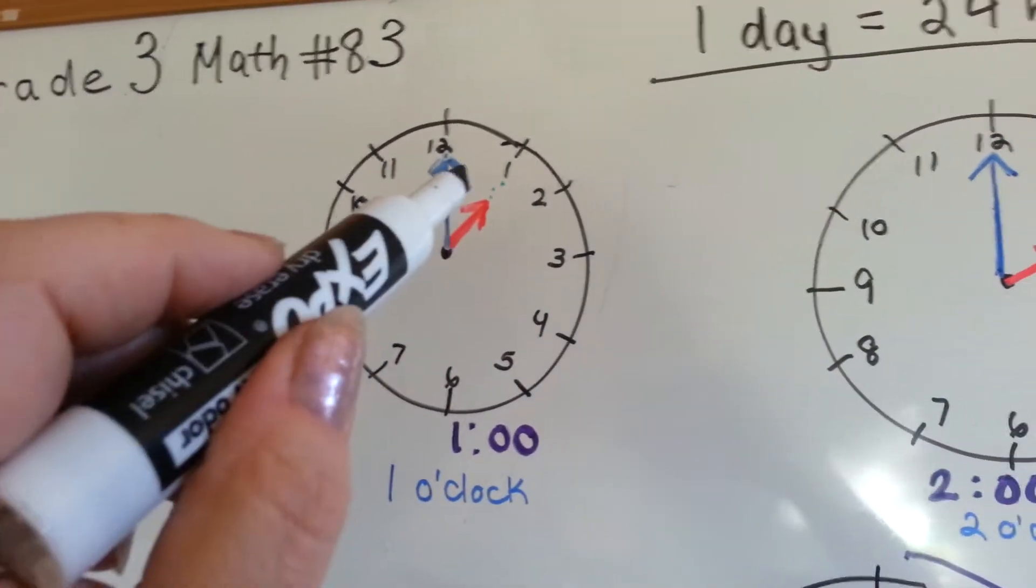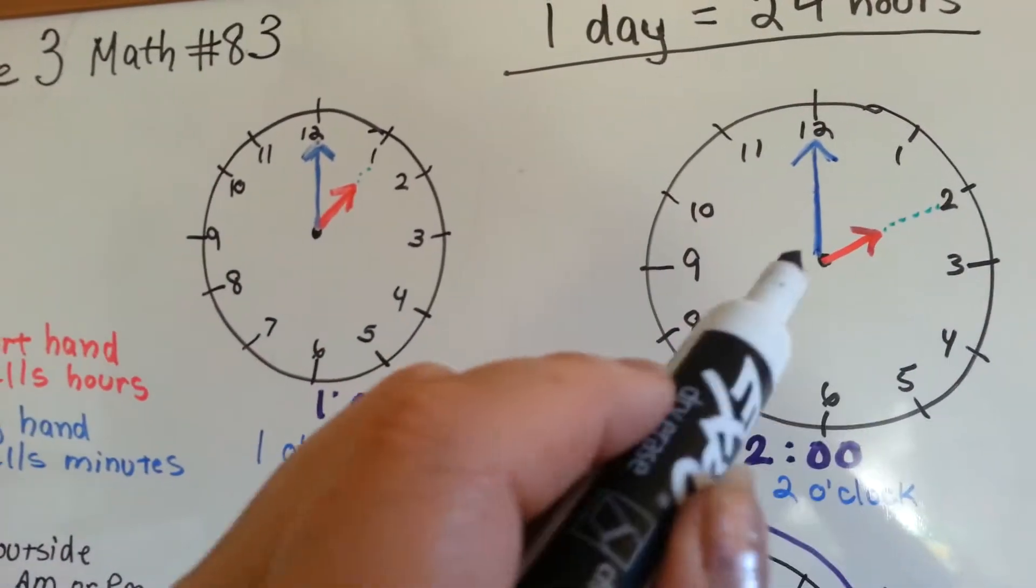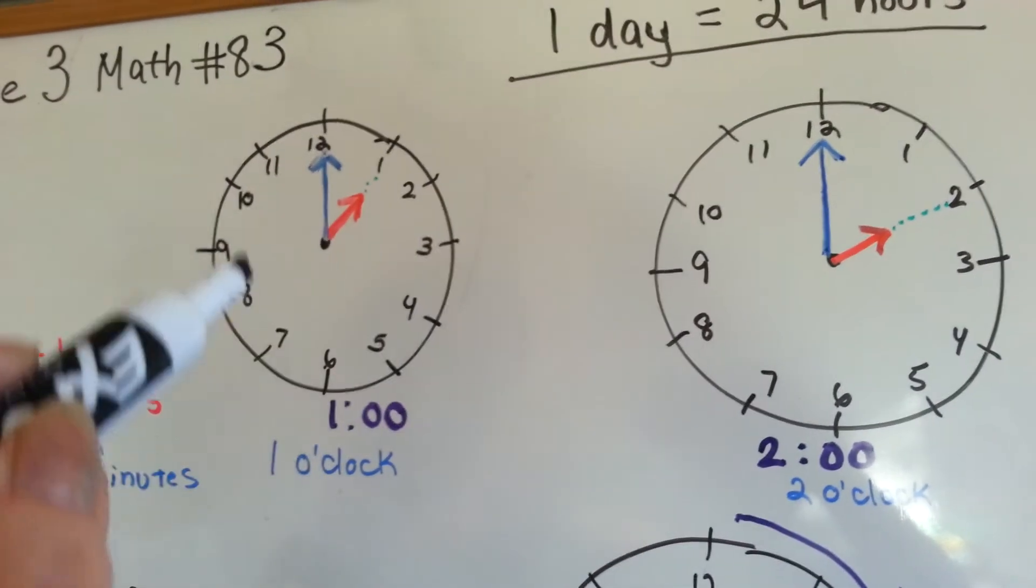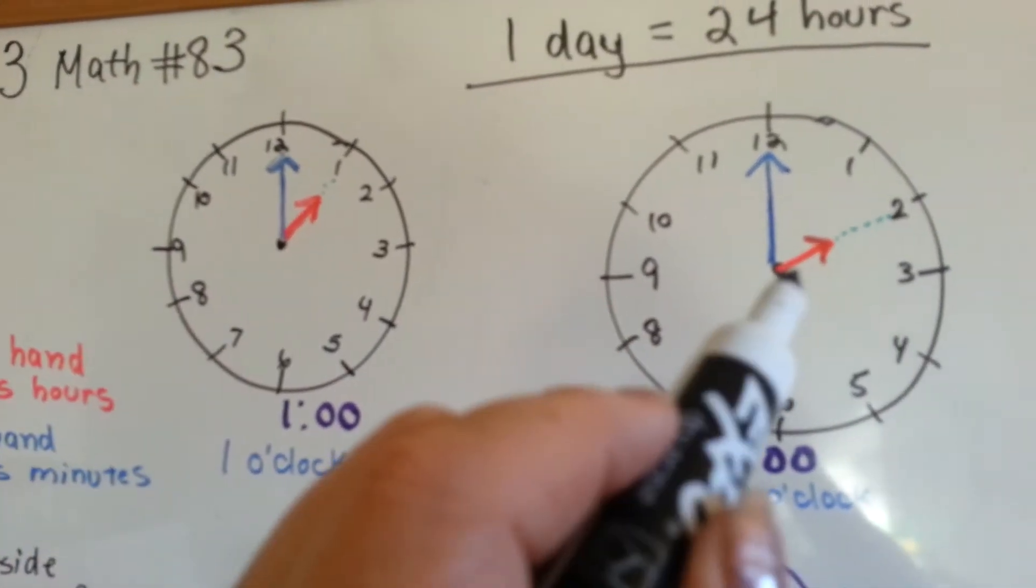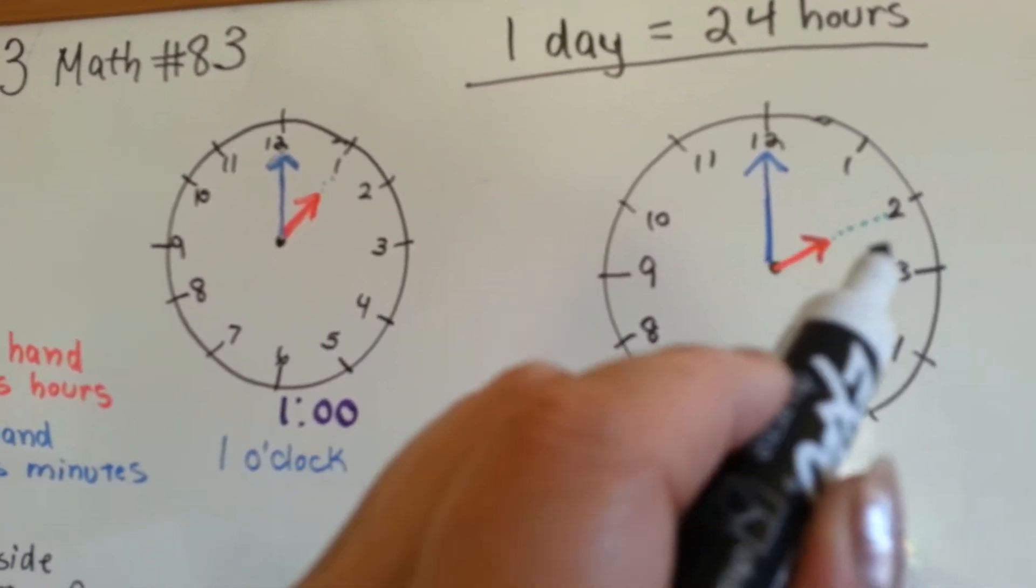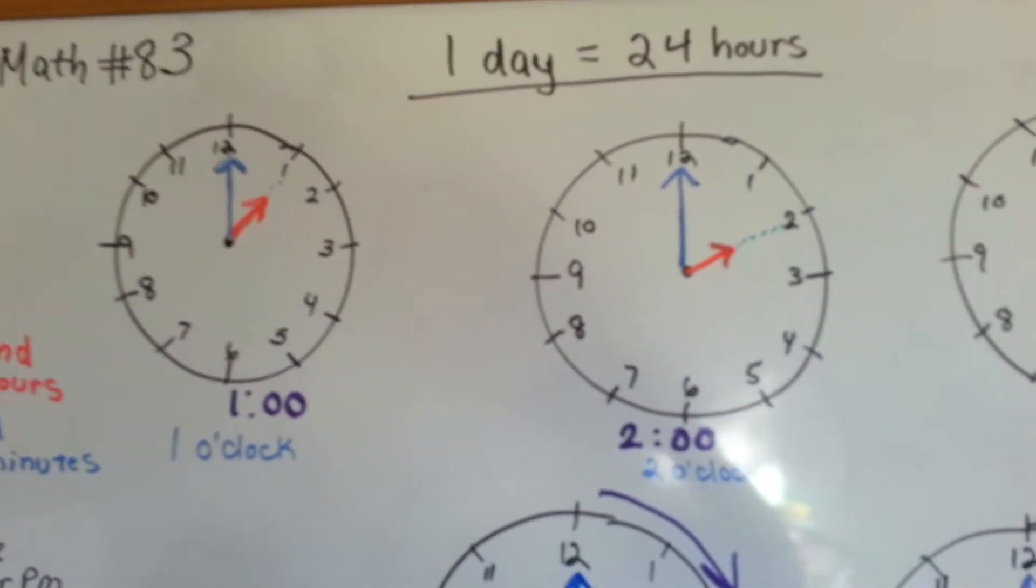At 1 o'clock, it's here. At 2 o'clock, the blue hand went all the way around, back up to the 12, and it made the red hand, the hour hand, move to the 2. So now it's 2 o'clock.